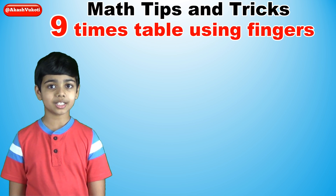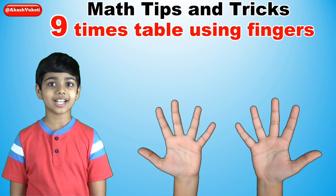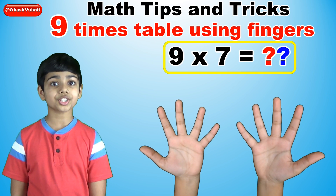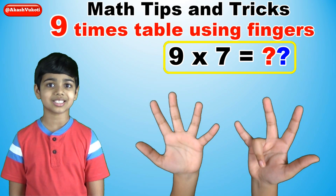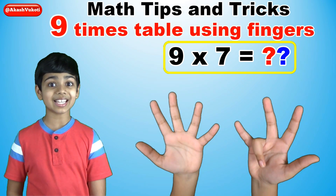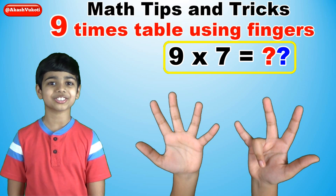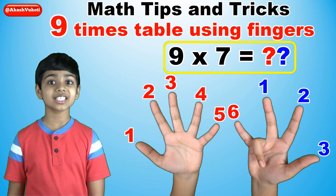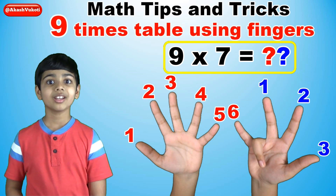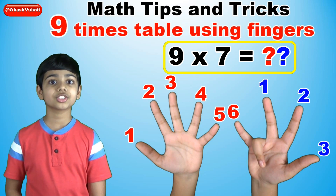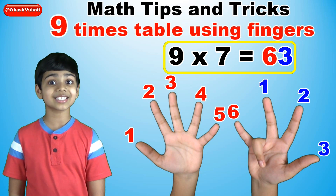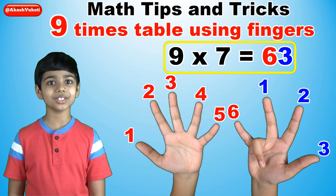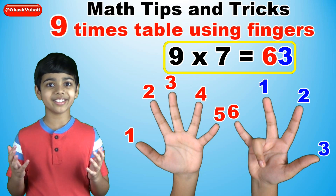Let's take an example: 9 times 7. Let's start by folding the 7th finger down like this. You're seeing the answer right now, actually. There are 6 fingers to the left of the folded finger, and there are 3 fingers to the right of the folded finger. So the answer is 63. You're seeing it right now. It's a super nice trick, right?